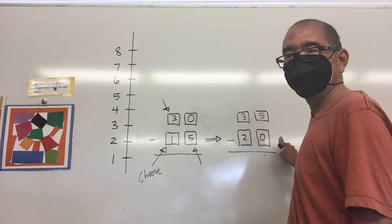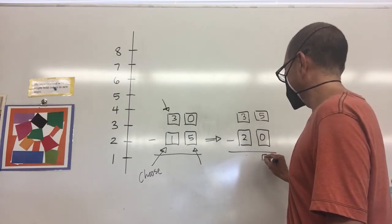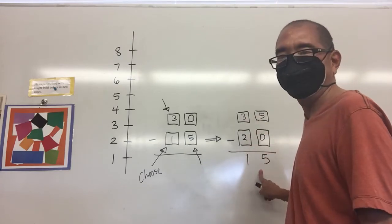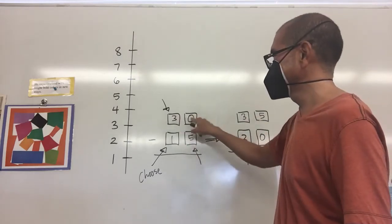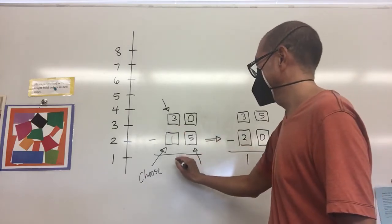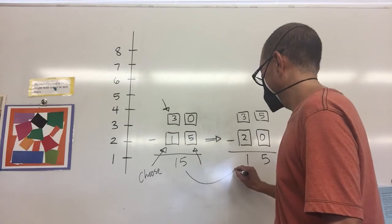Five minus zero is easy to do, that's a five. Three minus two is a one, so it's a 15. So if you did 30 minus 15 borrowing and renaming you should also get 15 which is the same.